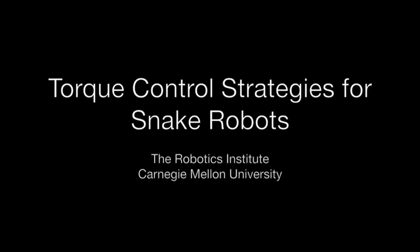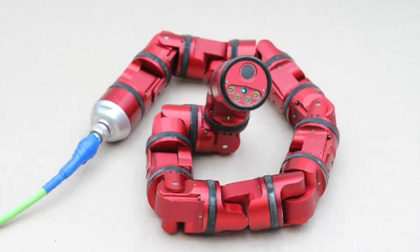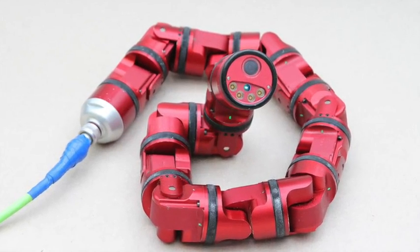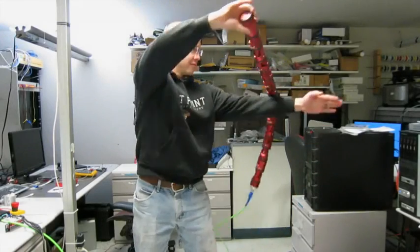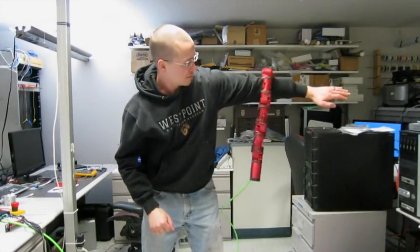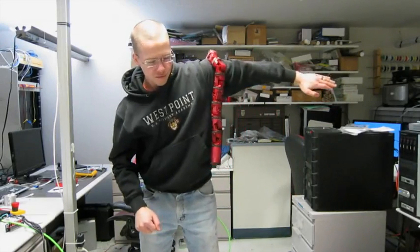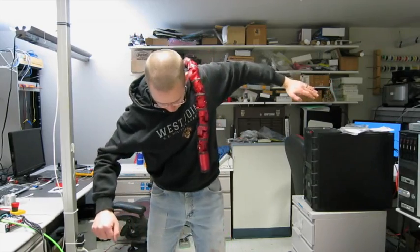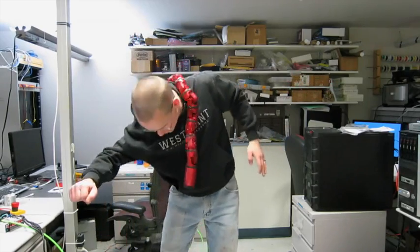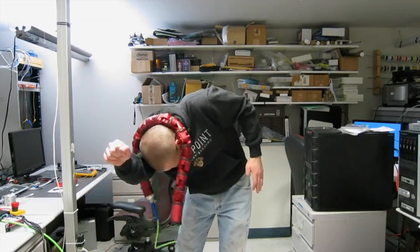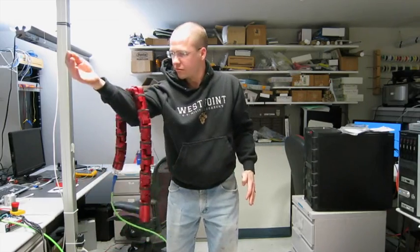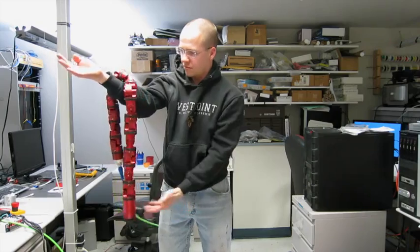This work presents the initial results of implementing various torque control strategies for a series elastic actuated snake robot. Compliant rolling is a behavior where the robot's torques are commanded to be proportional and orthogonal to the local curvature at each point along the robot's backbone. This results in the robot twisting around a given backbone shape while also being compliant to its surroundings.